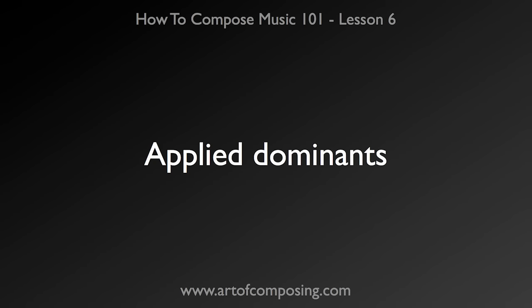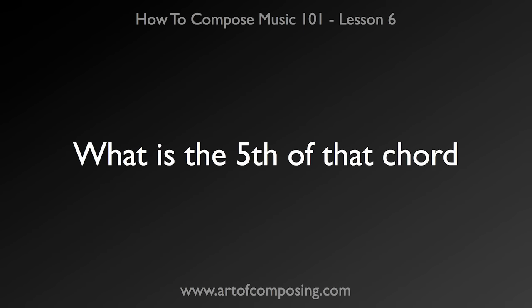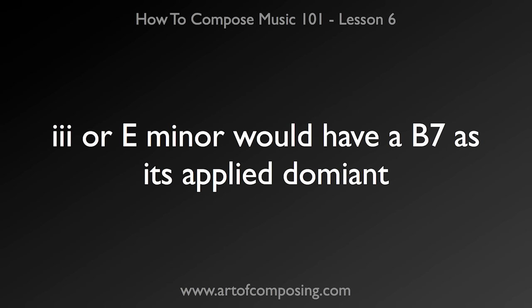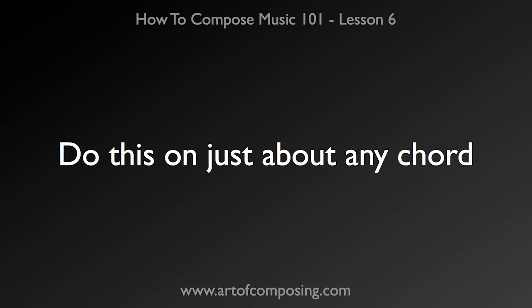Another way to have chromatic harmony is applied dominance. An applied dominant is pretty easy to figure out — just look at a chord as if it were the key unto itself. Ask yourself: if this were the tonic, what would be its dominant or 5th scale degree? For instance, if we are in C major and you have an E minor chord, then its applied dominant would be a B7 chord, because it is the 5th of E minor. You can do this for just about any chord in a piece. It is a great way not only to add harmonic interest, but also to modulate.